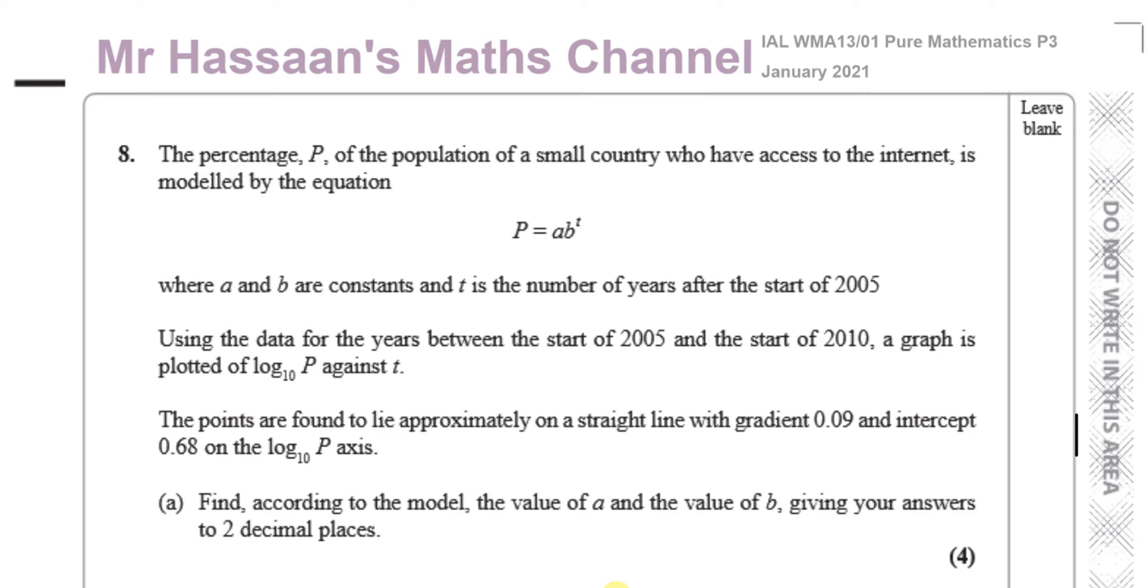This is a question about exponential functions, one of the newer type of topics that have come up in the P3 since they changed from C3 to P3. The percentage P of the population of a small country who have access to the internet is modeled by the equation P equals A times B to the power of T, where A and B are constants and T is the number of years after the start of 2005.